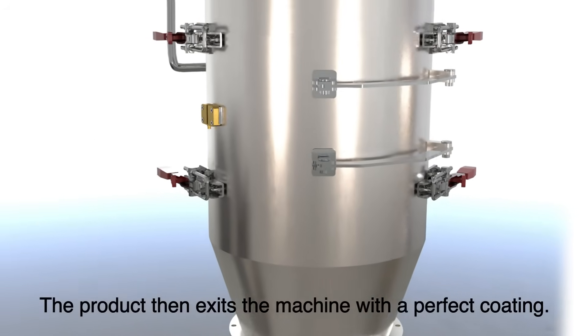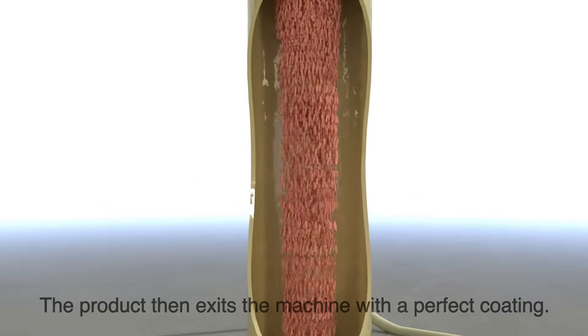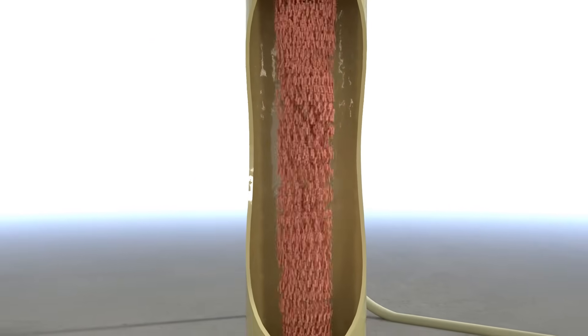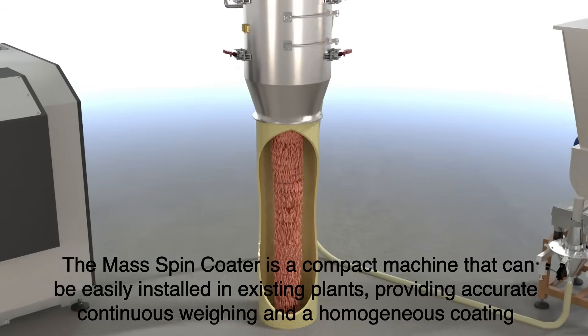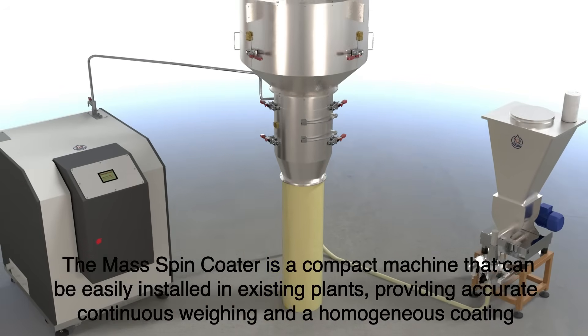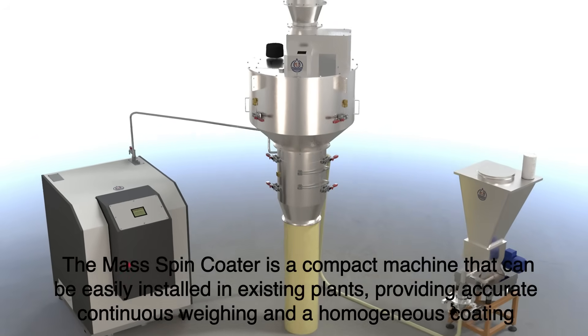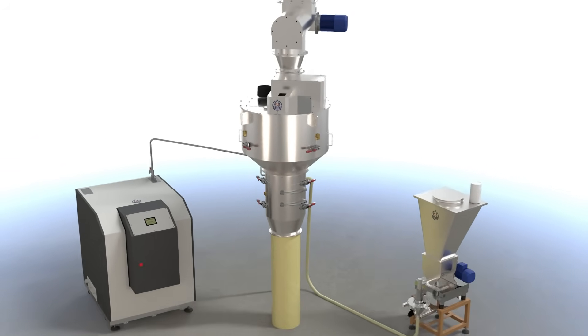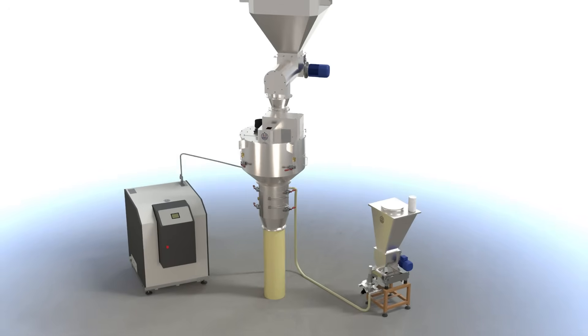The product then exits the machine with a perfect coating. The Mass Spin Coater is a compact machine that can be easily installed in existing plants, providing accurate continuous weighing and a homogeneous coating.